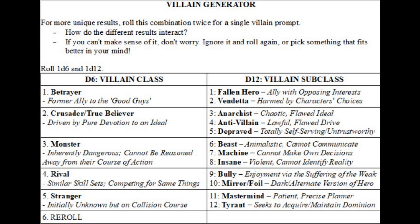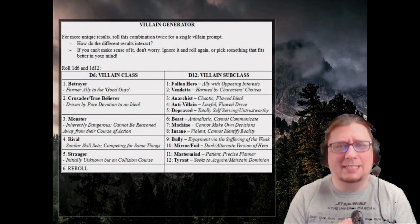But maybe you want a little more texture and resolution for what this villain looks like — roll again and add your results to the other. So maybe your first roll gives you Stranger and Tyrant, then you roll Monster and Vendetta. Now you know they start out as a stranger and a tyrant but are revealed to be a monster with a vendetta — as the heroes interrupt their plans for power, they become more inherently dangerous and cannot be reasoned away, developing this vendetta against the heroes. If you ever get duplicate answers, just reroll.